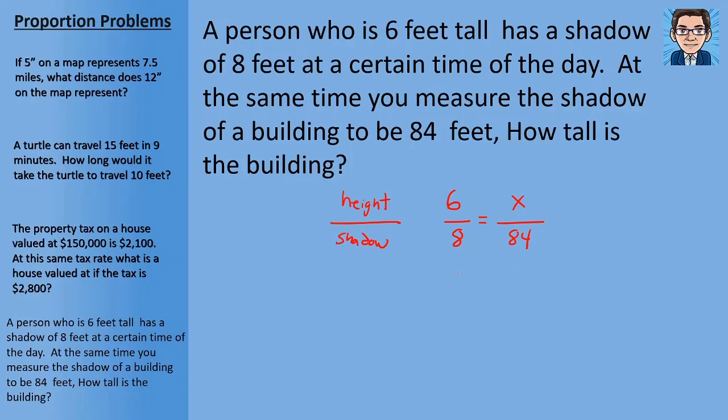And then we can cross multiply 8 times x. 8x equals 6 times 84 or 504. Divide both sides by 8 and you're going to get x equals 63. So the building is going to be 63 feet tall.